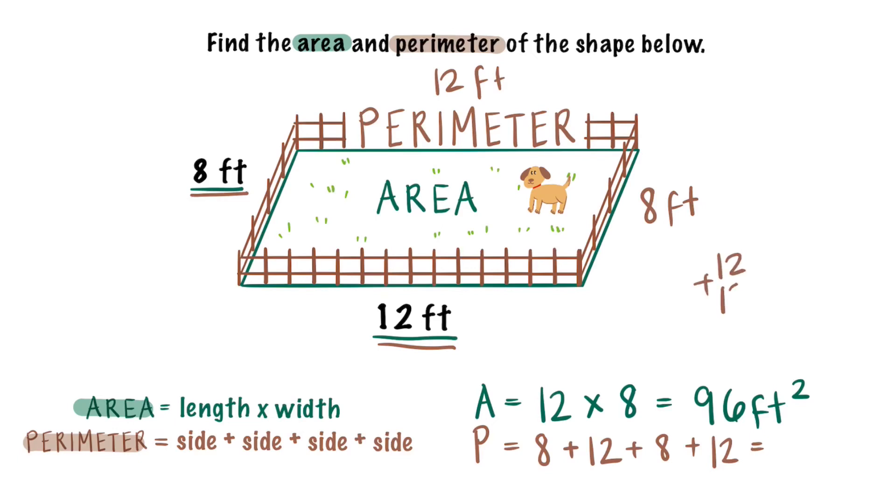Let's add up all of the sides to make sure our puppy does not run away. We know 12 plus 12 makes 24. 8 plus 8 makes 16. And 24 plus 16 together is 40. The perimeter equals 40 feet.